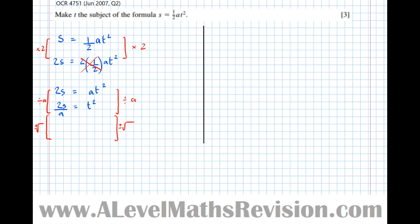In A-level, you must have plus or minus. So plus or minus root both sides, I get plus or minus root of 2S over A equals T. There we've made T the subject: T equals plus or minus root of 2S over A.